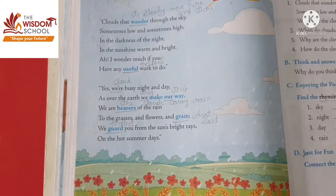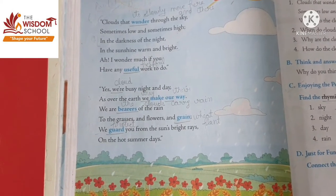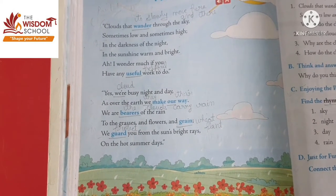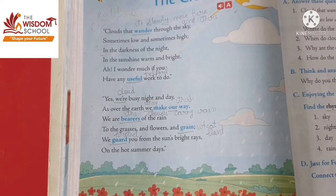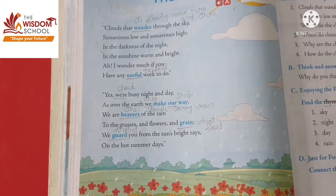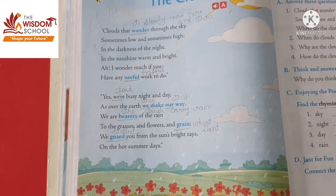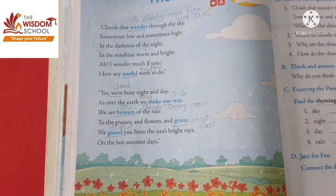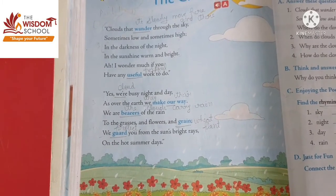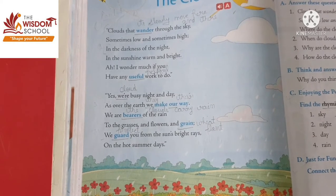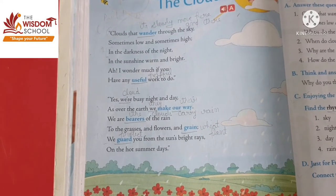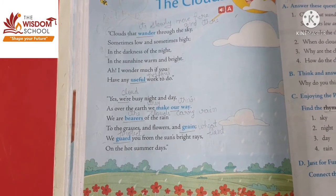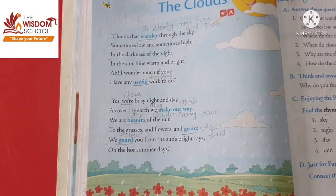We bearers of the rain. हम rain को क्या करते हैं? Bear करते हैं, carry करते हैं. To the grasses and flowers and grain. We guard you from the sun's bright ray. हम sun की bright ray से तुम्हें protect करते हैं — on the hot summer days.